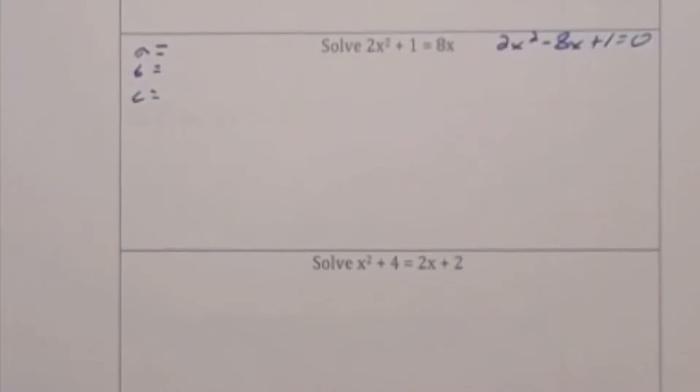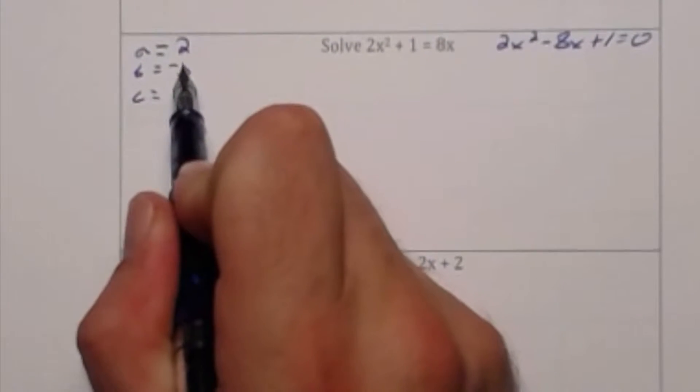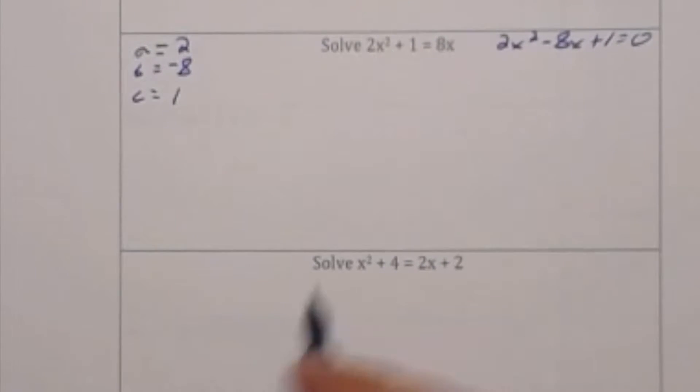So 2x squared minus 8x plus 1 is equal to 0. This means that a is 2, b is negative 8, and c is 1.